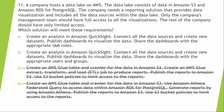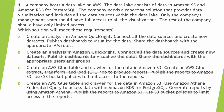Looking at the QuickSight options: one option says create an analysis in Amazon QuickSight, connect all the data sources, create new data sets, publish dashboards to visualize the data, and share the dashboards with IAM roles. Since the management team should have full access and the rest should have limited access, you need to share with particular users and groups. The correct answer is: create an analysis in Amazon QuickSight, connect the data sources, create new data sets, publish the dashboard, and then share the dashboard with the appropriate users and groups.